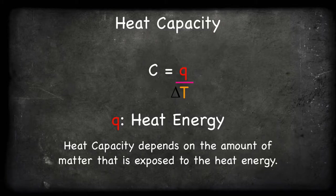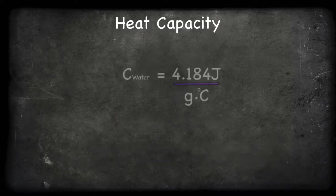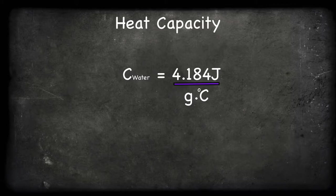For example, water has a specific heat of about 4.184 joules per gram degrees Celsius. So you can interpret it as, when one gram of water takes in 4.184 joules of heat energy, its temperature will raise by one degree Celsius.